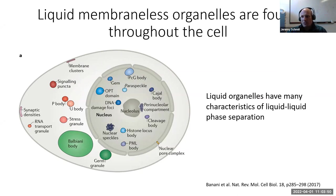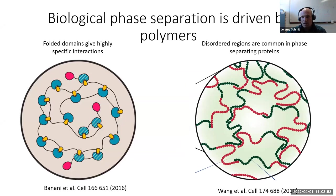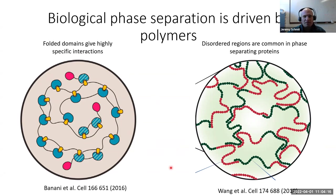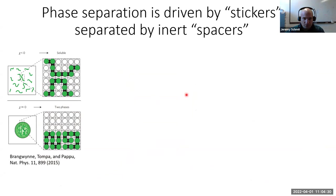Liquid-liquid phase separation in biomolecules has been known since at least the late 1970s, but what makes these different inside the cell is that they seem to be driven by polymer-like molecules — either beaded chains of folded domains or intrinsically disordered polypeptide chains. This unlocks the incredible power of polymer physics developed over the decades, and the starting point for much of this analysis is Flory-Huggins theory.